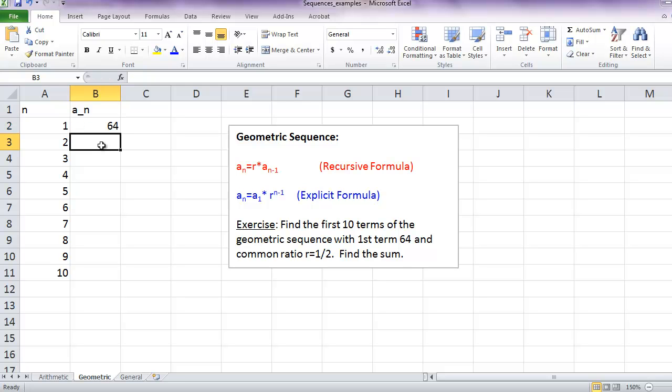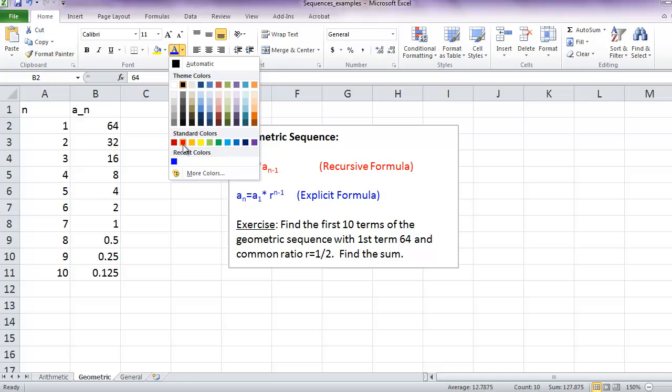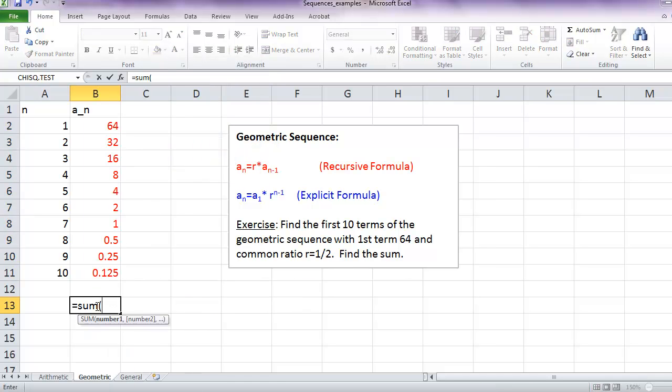For geometric sequence, it's the previous term times the common ratio, which in this case is 1 half. We can fill down. And those are the terms of our geometric sequence. We can find the sum.